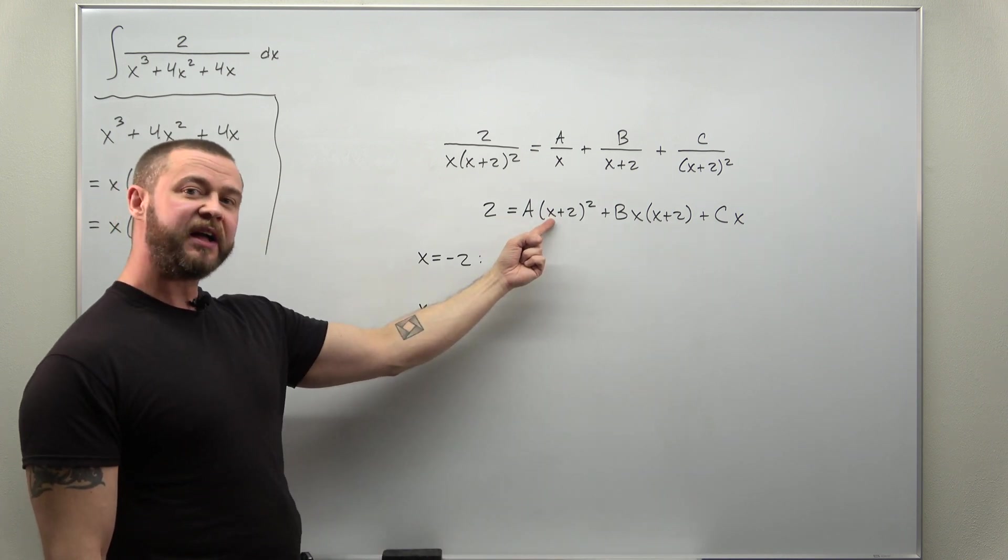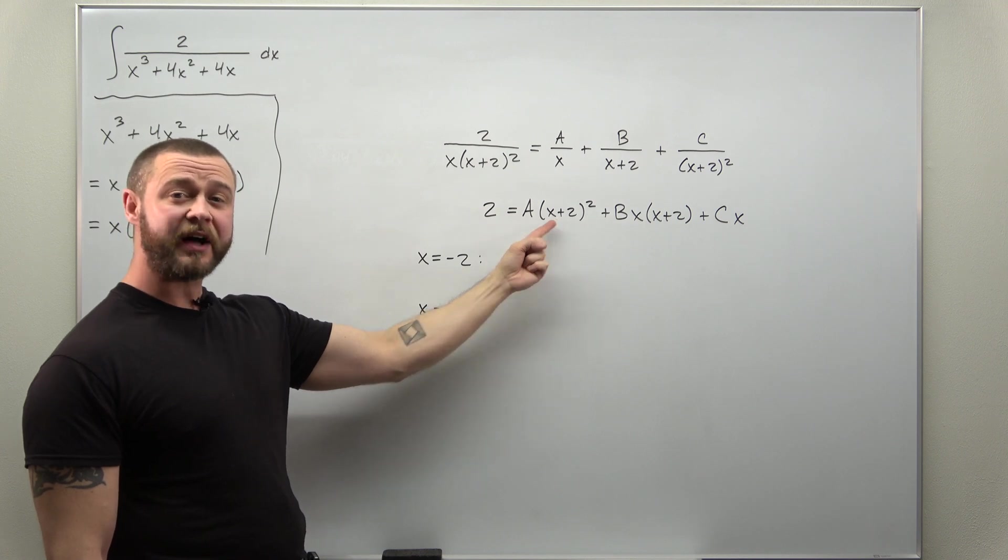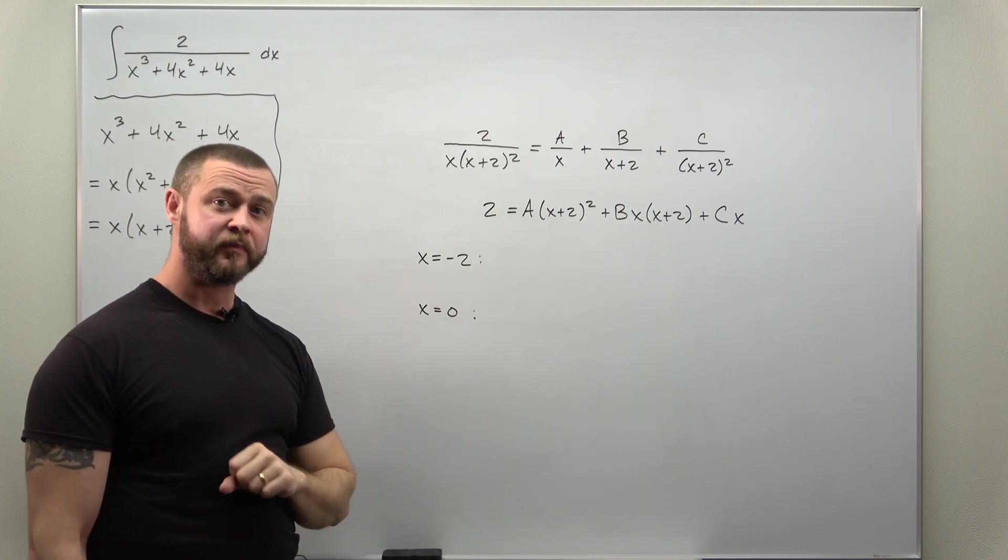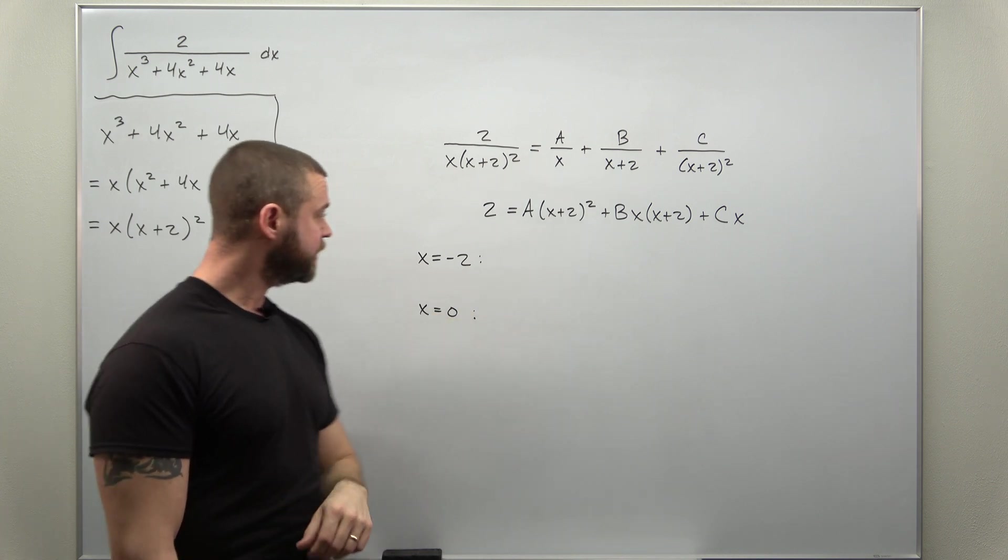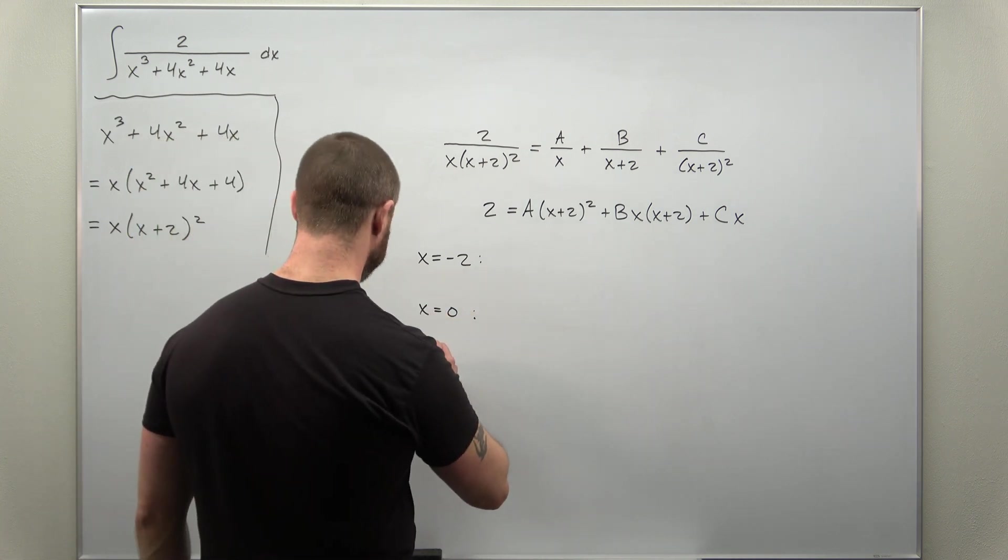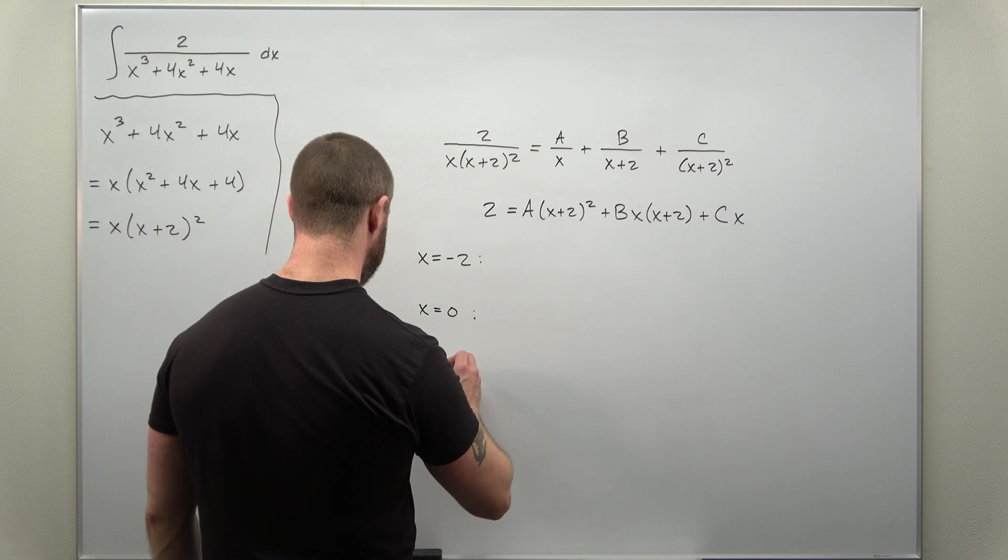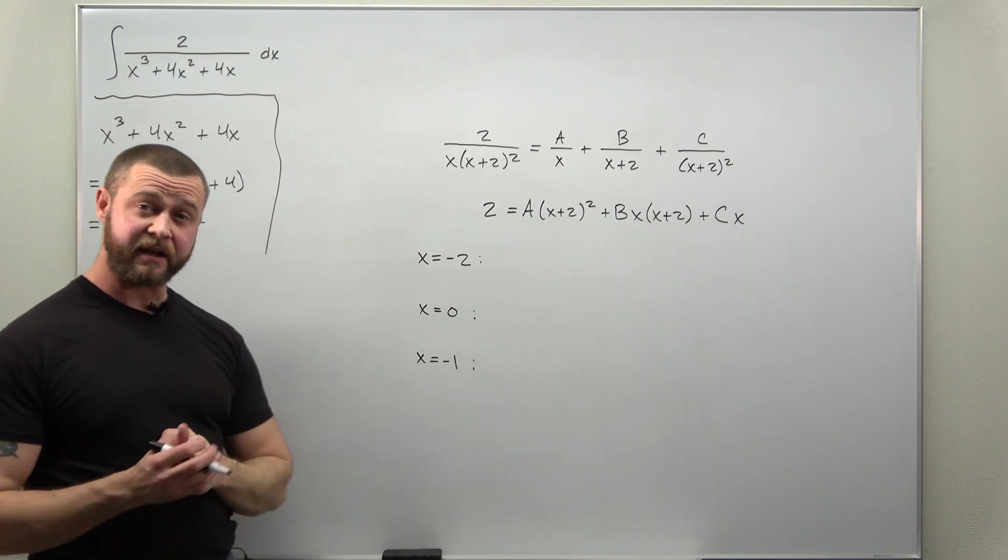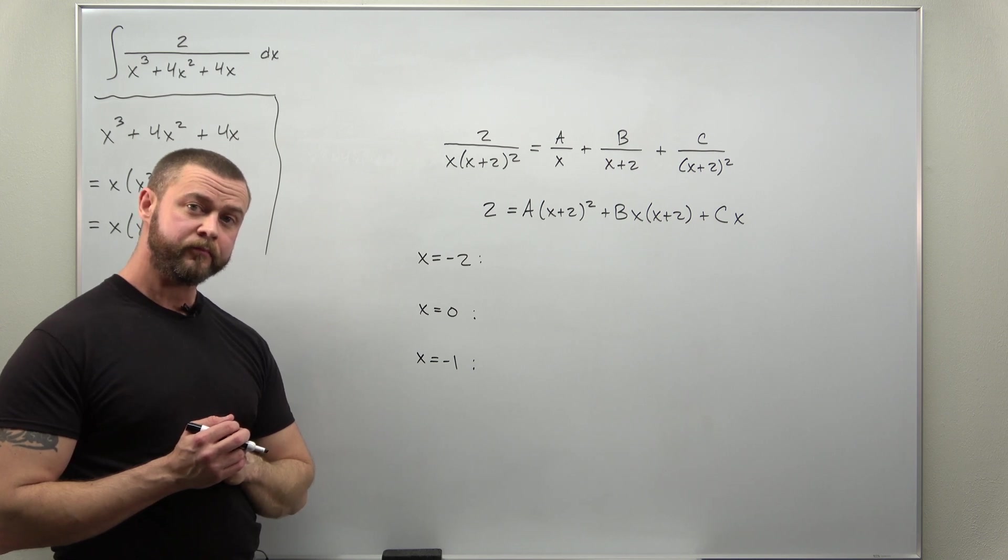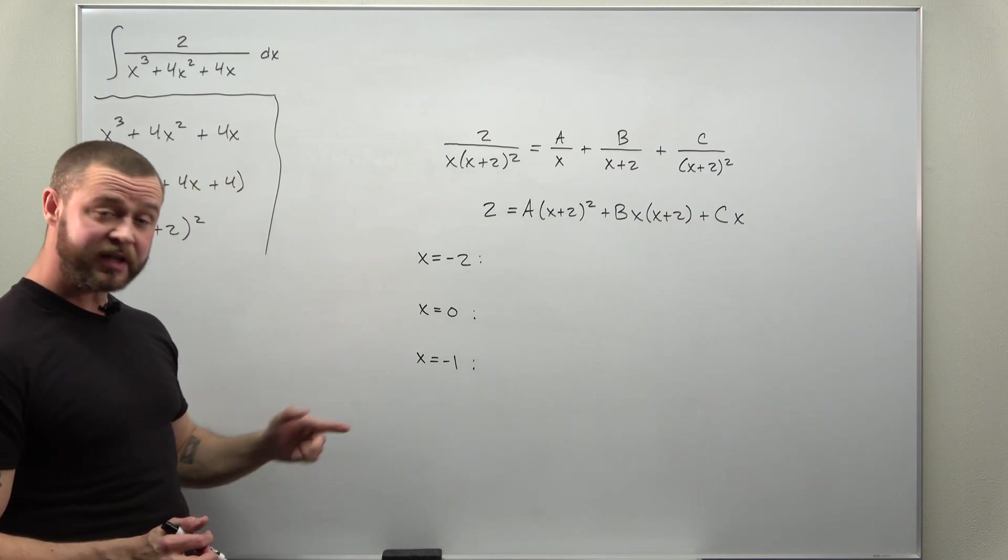If I choose x as negative 1, I can make this inside become positive 1. And taking powers of 1, that's very nice. So as our third value, and again we can pick anything, but we'll choose x as negative 1. Alright, let's take our time and plug those in individually.